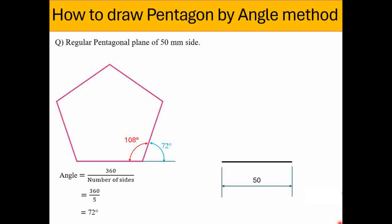Name the endpoints of this line as A and B — the first line of the pentagon whose vertices are named ABCDE. As per the procedure, we can use either 72 degrees from the outer side or 108 degrees from the inner side. I will make use of the inner angle, that is 108 degrees.